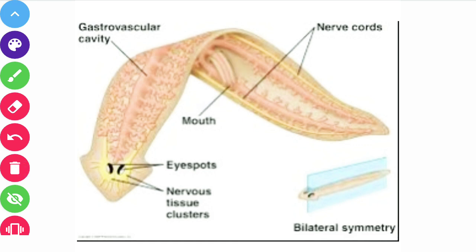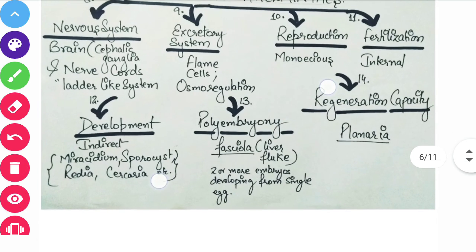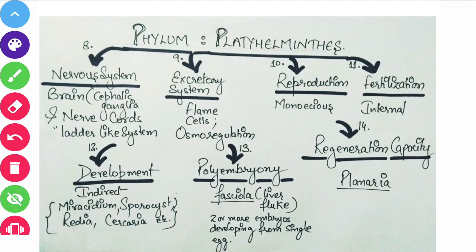Before this phylum, no organisms had a brain or ganglia — they had just a nerve net. Platyhelminthes have a brain and nerve cord, with a ladder-like nervous system. They don't have a central, peripheral, and autonomic nervous system like higher animals, but they have brain and nerve cord. They also have eye spots — these look like eyes but are not true eyes; they cannot see. These are rudimentary structures.